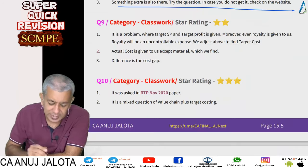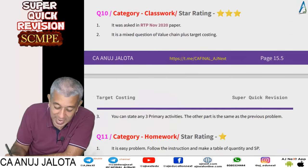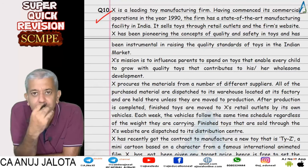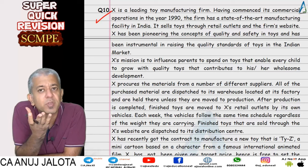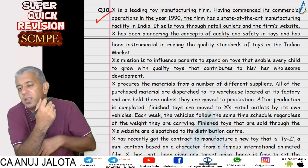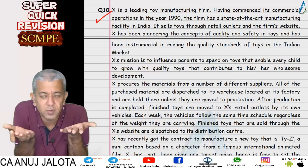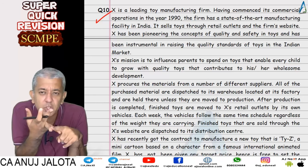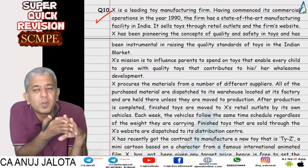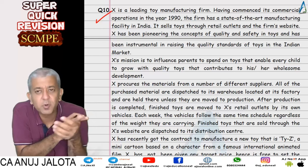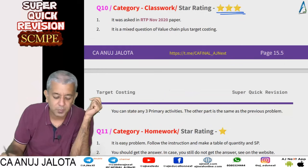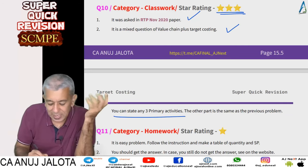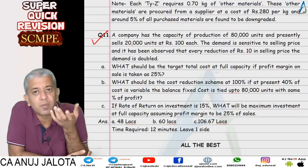Question nine is two-star; question ten is three-star, asked in November 2020 exams. It is almost the same as the previous question but also requires you to mention primary activities under the value chain. Under the value chain there are five primary activities: inbound logistics, production and operations, outbound logistics, marketing and sales, and after-sales service. You need to state what three primary activities apply to this particular company. It is a mixed question combining value chain and target costing.